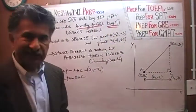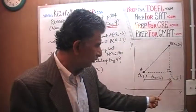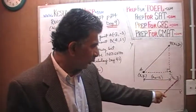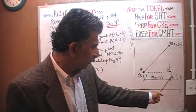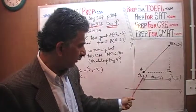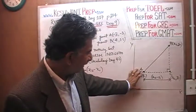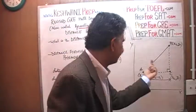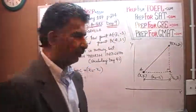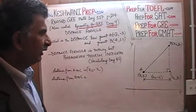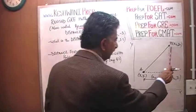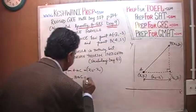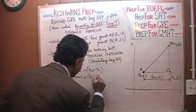So point C has coordinates x2 — the same x-coordinate as B — and y1, the same y-coordinate as point A, since it is at the same height. The distance from B to C is simply y2 minus y1.